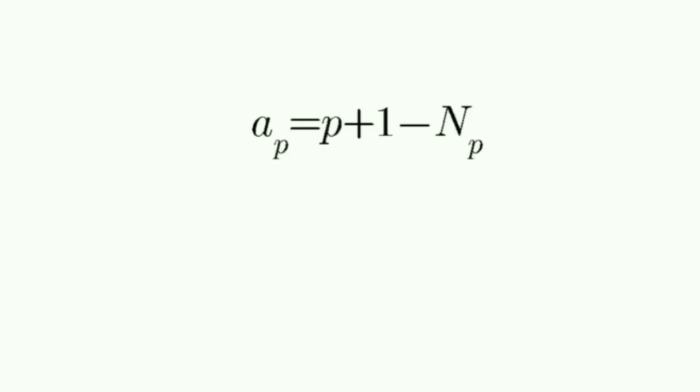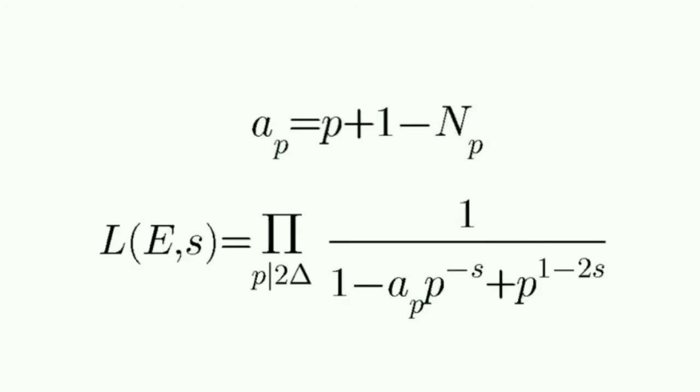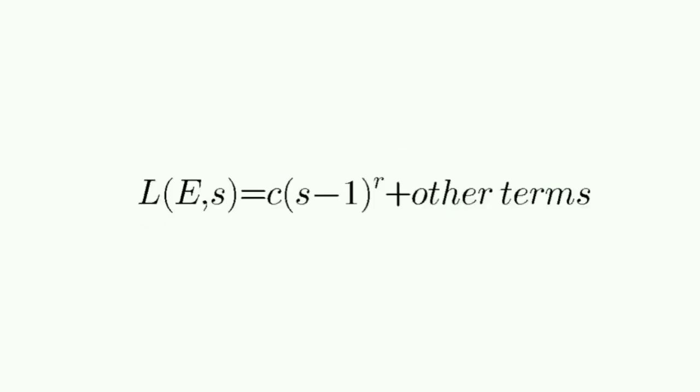L series is defined as the following. Here s is a complex number and for real part of s greater than 3 by 2 the function converges. Here we define rank as order of vanishing of the L series at s equal to 1. We can also say that the Taylor expansion of L series at s equal to 1 is this and this is what the conjecture actually is.